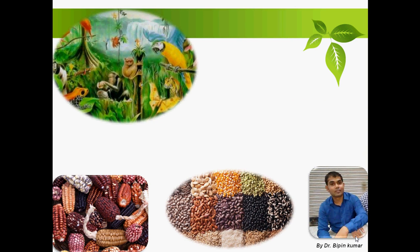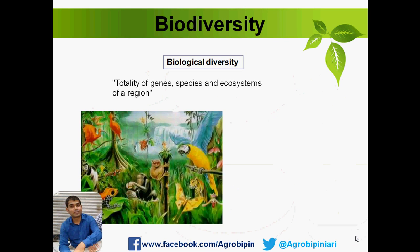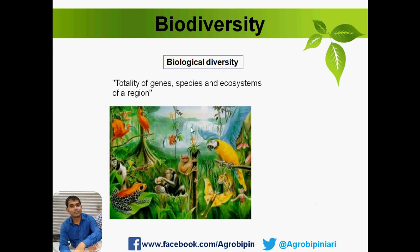Hello everyone, I am Dr. Bin Kumar, and I am going to give another lecture on biodiversity and agrobiodiversity. First of all, I want to say that biodiversity was not present when the earth was formed, because the earth was part of the sun and at that time there was no life. Later on, living forms started to form on this planet, from simple to multiple and complex organisms, and gradually different types of living organisms started to live on this planet — and that became biodiversity.